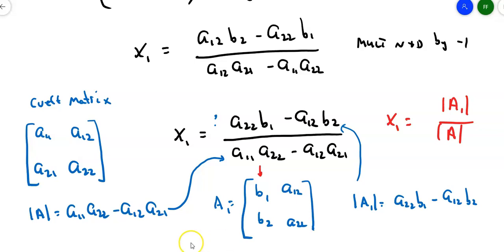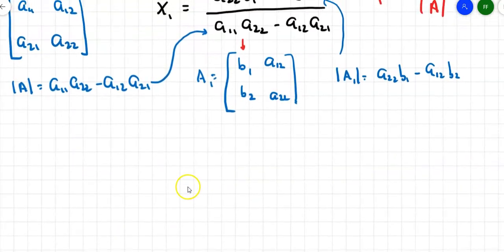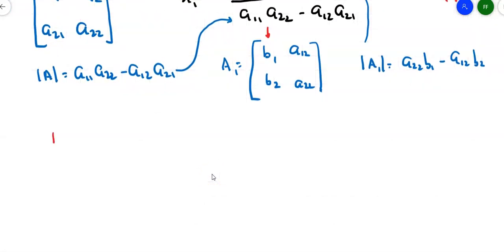I can actually do the same thing for x sub 2. I can create a second matrix where matrix A sub 2 keeps the a11 and the a21, and this time replaces the second column with b1b2. And so x sub 2 will be the determinant of matrix A sub 2 over the determinant of matrix A.